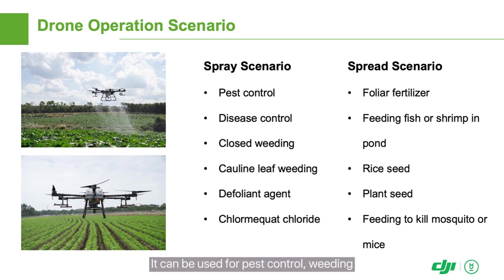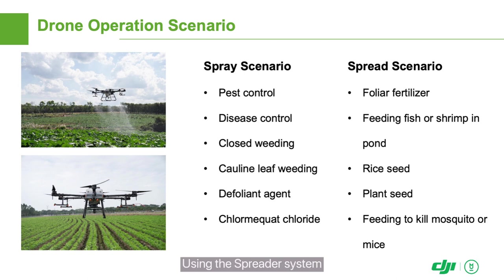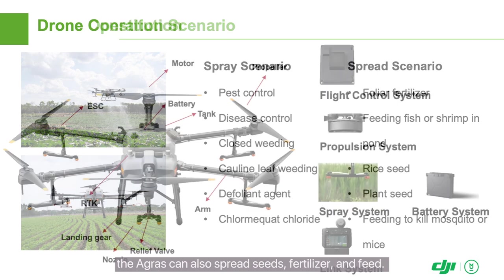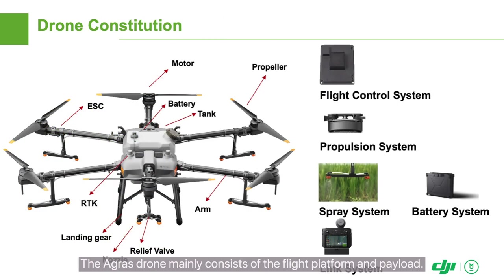It can be used for pest control, weeding, and spraying foliar fertilizers and defoliant. Using the spreader system, the Agris can also spread seeds, fertilizer, and feed.